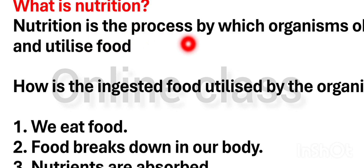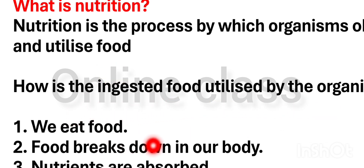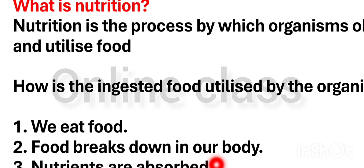Nutrition is the process by which organisms obtain and utilize food. How is ingested food utilized by the organism? We eat food, food breaks down in our body, nutrients are absorbed, the body uses nutrients for energy, and waste is eliminated.